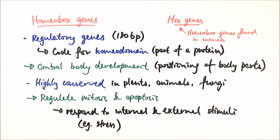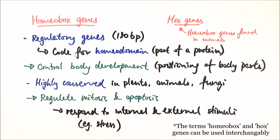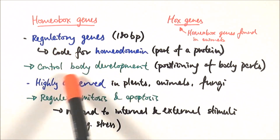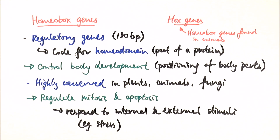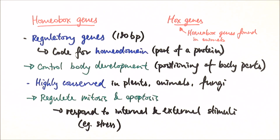For exam purposes, you need to be able to state what homeobox genes or hox genes are — the definition: they are regulatory genes that control body development. You also need to know they are highly conserved across different types of organisms, that they can regulate mitosis and apoptosis in response to certain stimuli, and that hox genes is the name given to homeobox genes found in animals.